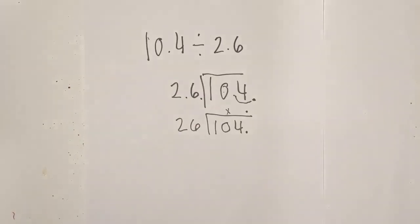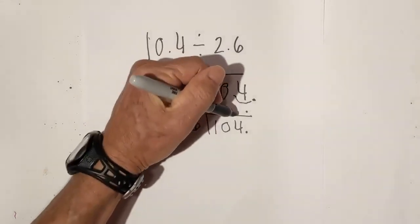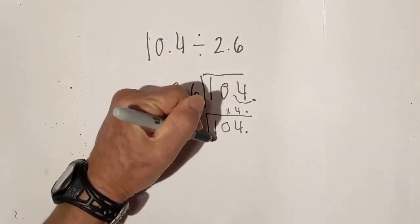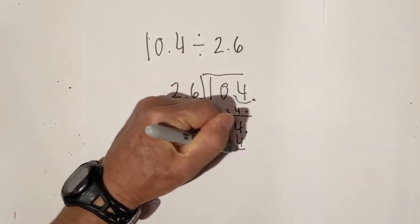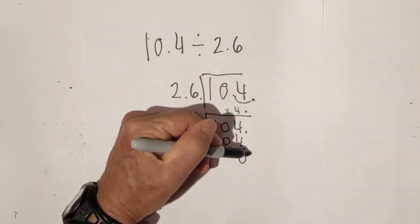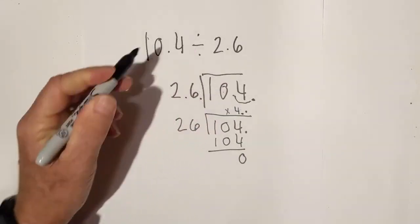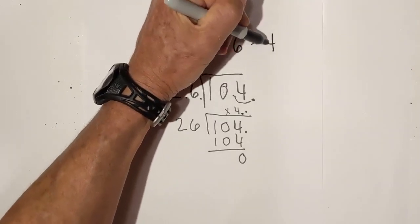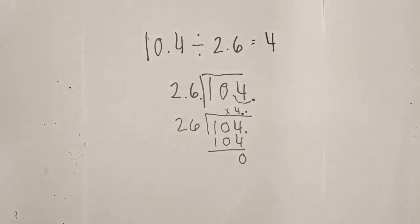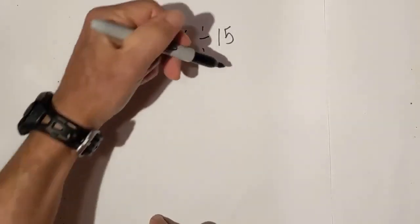Will 26 go into 10? No. Next, divide 104 by 26 — that is 4. 4 times 26 is 104. Subtract — that is zero. Nothing to bring down, and the decimal point is right here, so the answer is 4.